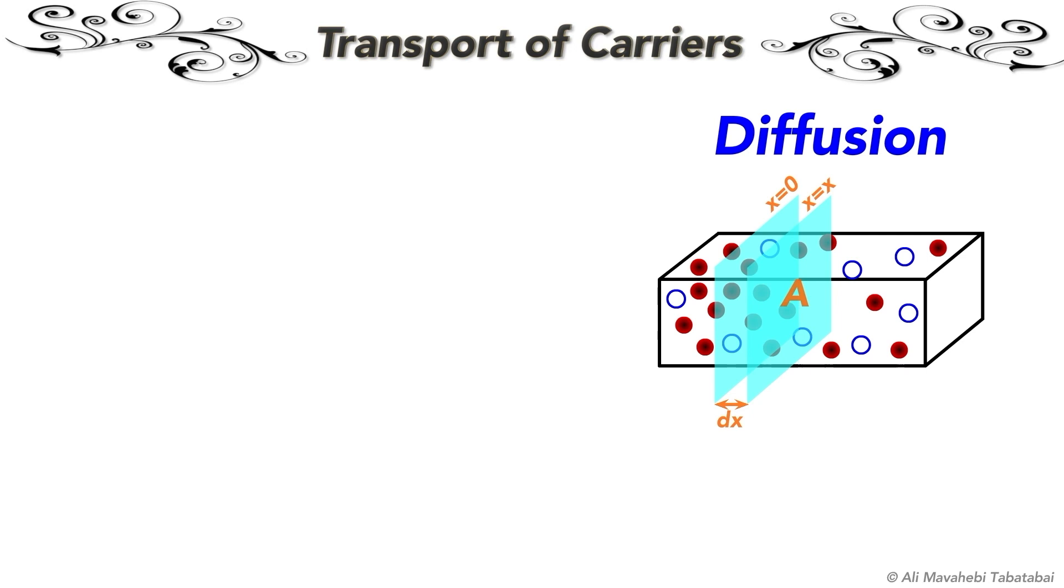For example in this picture, the concentration of electrons in the area at x equals 0 is greater than the concentration of electrons at distance x. So dN over dx, which is the concentration gradient, is not 0.